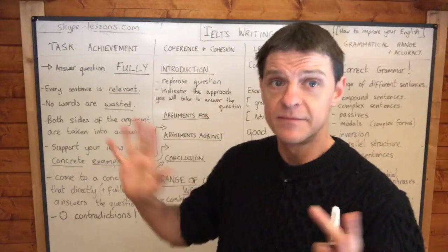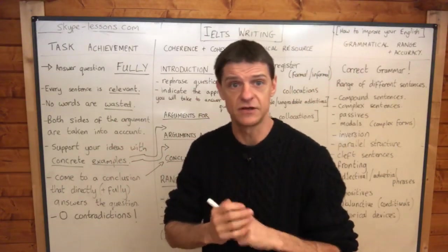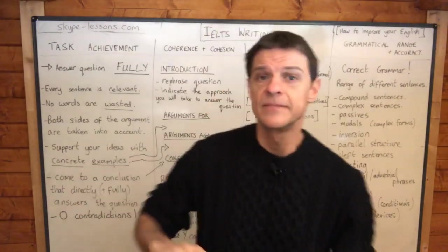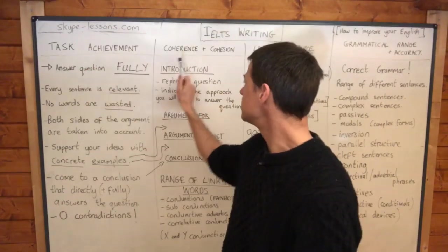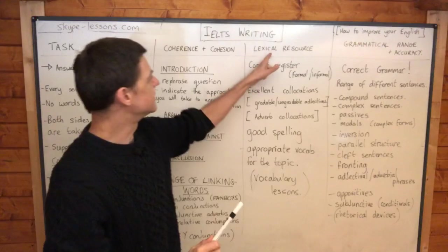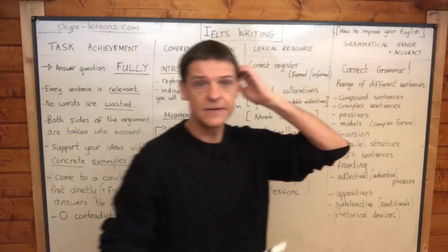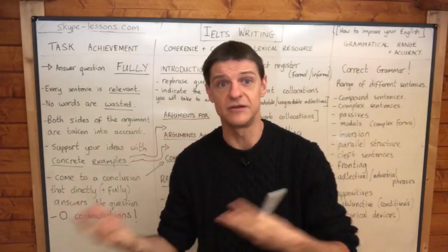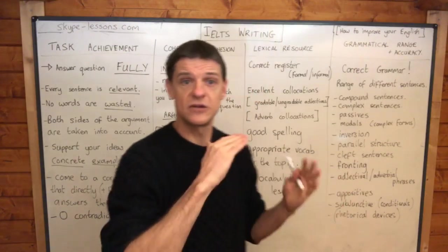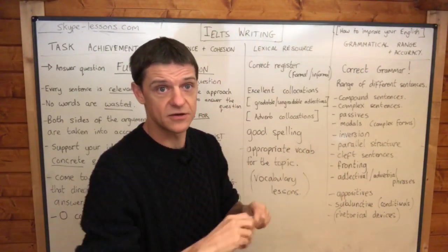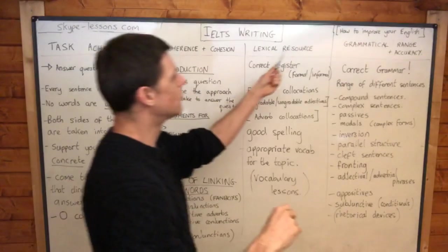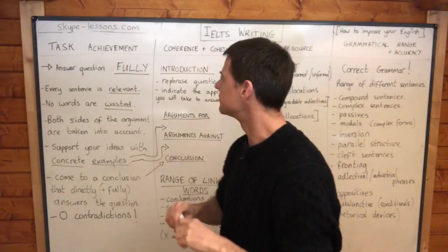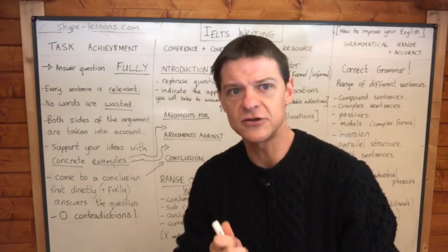So there are many things you can think about if you've got an exam ahead of you — maybe you've got FCE, maybe you've got CAE, something like that. You need to think about these points. Now I've taken these titles — Task Achievement, Coherence and Cohesion, Lexical Resource, and Grammatical Range and Accuracy — from the criteria that IELTS examiners use to decide whether you get Band 6, Band 7, Band 8, Band 9. They judge you on these four categories, and we're going to look at what they really mean.